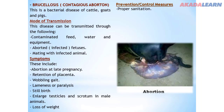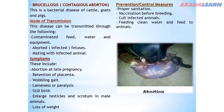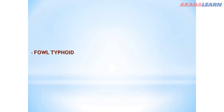Prevention and control measures for brucellosis: proper sanitation; vaccination before breeding or mating; cull infected animals by removing them from the herd; and feed the animals clean water and feed.